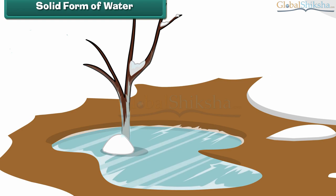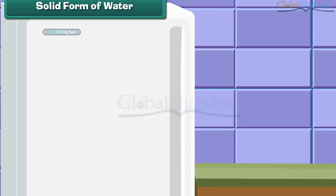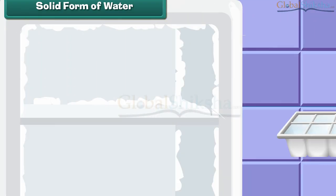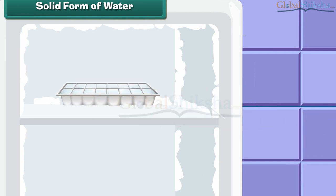Liquid water turns solid when cooled. At home we have seen liquid water become ice when kept in the freezer. Therefore, ice is an example of water in solid form. It is man-made.